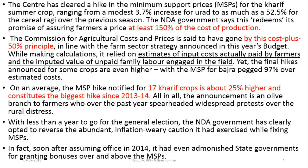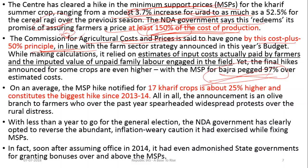Coming to the article: The central government has recently announced MSP and claims farmers will get 150% of the cost of production — following the cost-plus-50% principle. The government cites figures such as a 3.7% increase in one crop, 4% in another, 52% in another, and 97% in yet another crop, indicating varied increases across commodities.